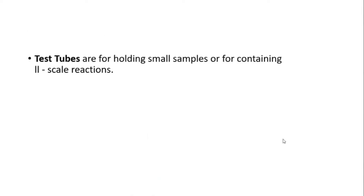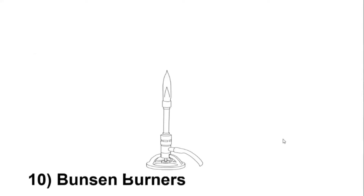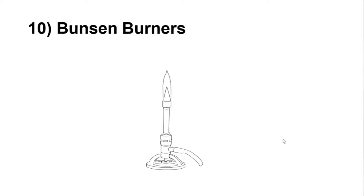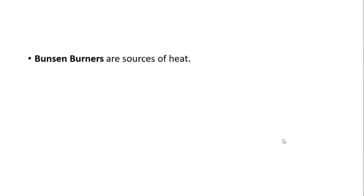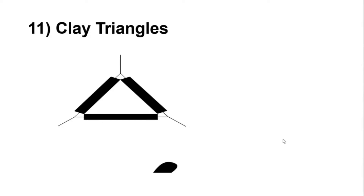Test tubes are for holding smaller samples or for containing chemical reactions. Number ten, Bunsen burners. This is a picture of Bunsen burners. Bunsen burners are a source of heat. We usually use Bunsen burners in the lab when we are heating.